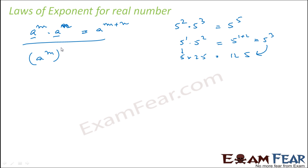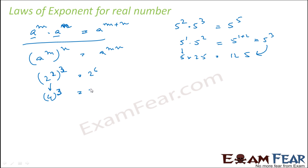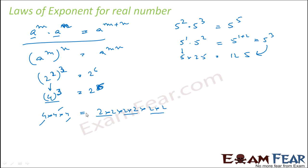The second rule: a to the power m, raised to the power n, is nothing but a to the power m times n. For example, 2 to the power 2, raised to the power 3, becomes 2 to the power 6. Let's verify: 2 to the power 2 is 4, and 4 to the power 3 is 4 into 4 into 4. Meanwhile 2 to the power 6 is 2 multiplied 6 times. Each group of 4 equals two 2's, so both sides equal 64.